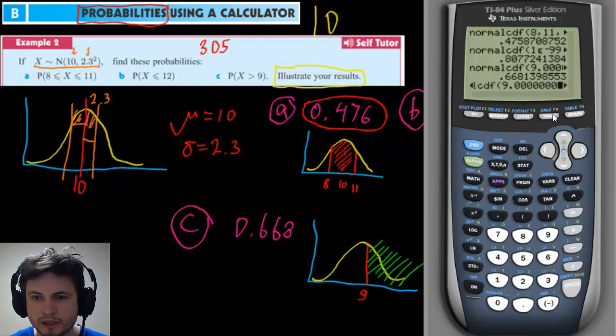So the way you enter the values is the lowest value is first so this would be 9.001 then comma highest value comma your normal distribution comma standard deviation and then close your brackets and click enter and this will give you your answer.